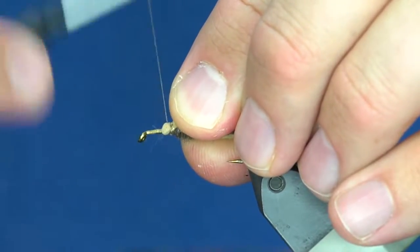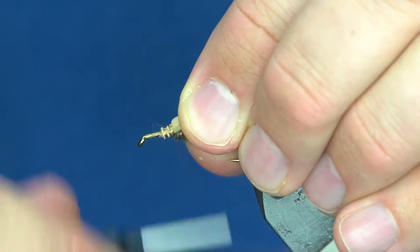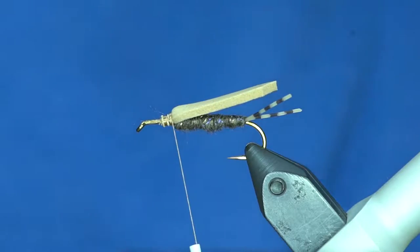I'll just tie this down right in front of the body and then trim off the excess. Once I do that, I really want to grab that butt end of the foam and tie that down.